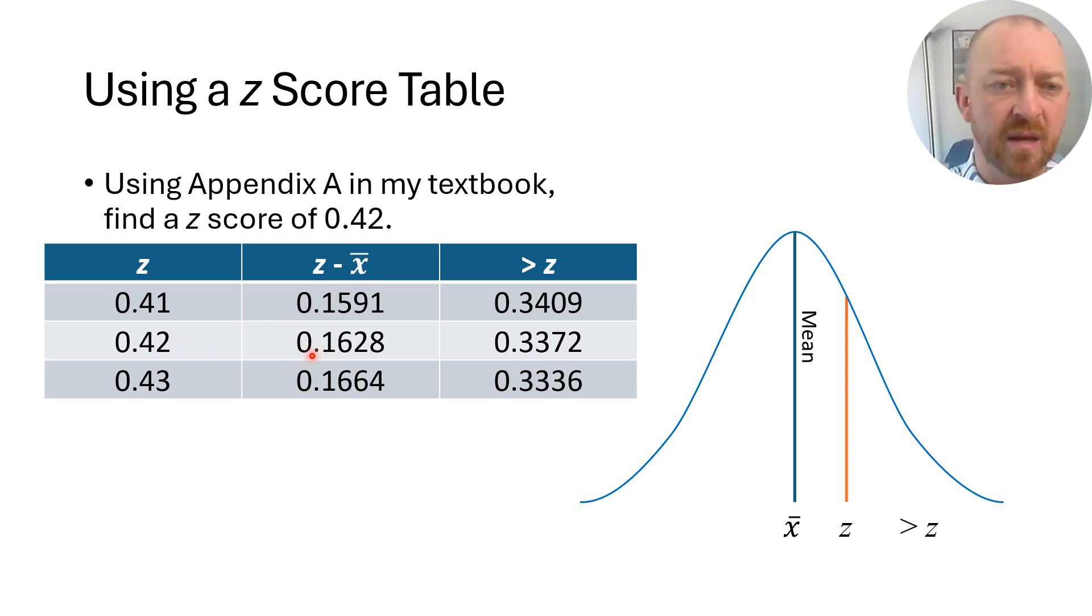What we see right here is that in between that z-score, between the z-score of 0.42 and the mean, there's 16.28% of the people. That's interesting, and we can use that as well. And then this is saying that the proportion of the population that falls above the z-score of 0.42 is 33.72%. In other words, 33.72% of the population falls above a z-score of 0.42.